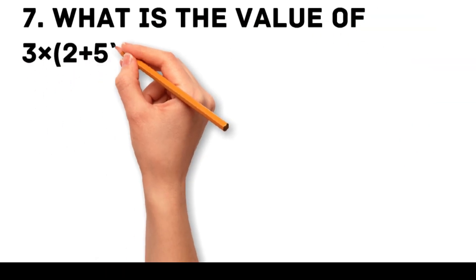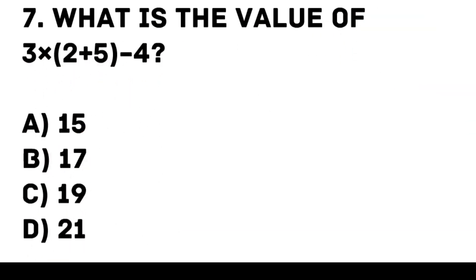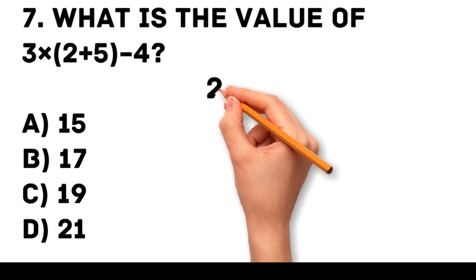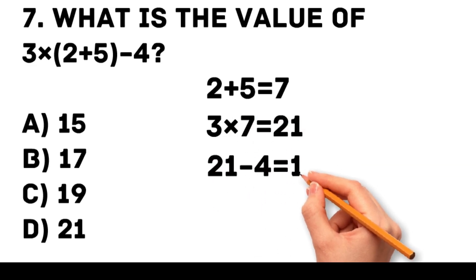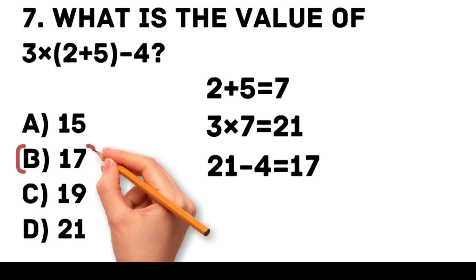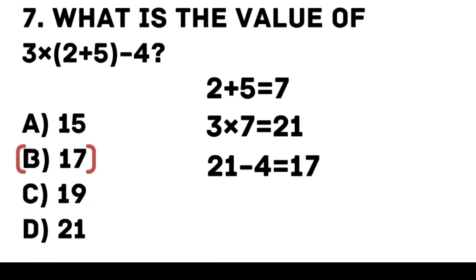Question 7. What is the value of 3 times (2 plus 5) minus 4? A. 15. B. 17. C. 19. D. 21. Answer: C. 17. First, perform the operation inside the parentheses. 2 plus 5 is equal to 7. Then multiply by 3. 3 times 7 is equal to 21. Finally, subtract 4. 21 minus 4 equals 17.